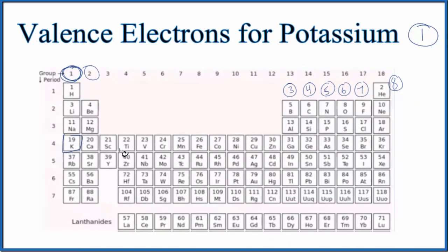We could also write the electron configuration for potassium. Potassium has 19 protons. Its atomic number is 19. 19 protons, since these are all neutral, it'll have 19 electrons as well. So let's write the electron configuration for potassium.